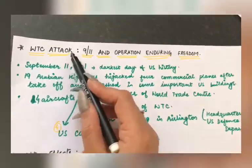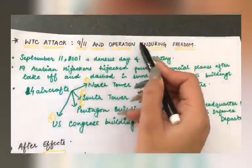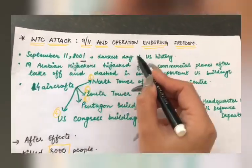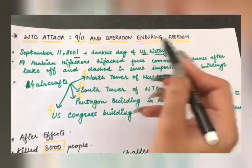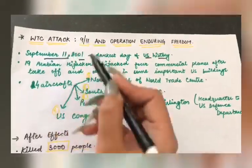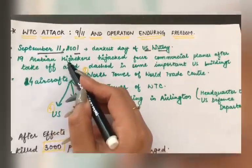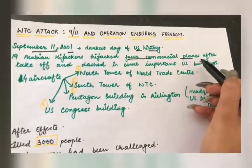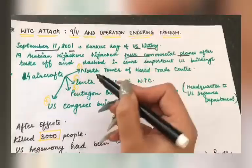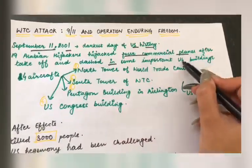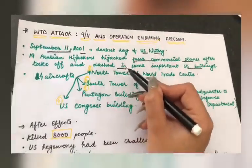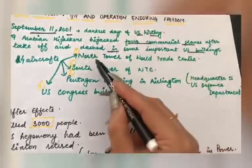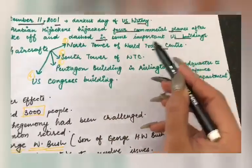Next comes the World Trade Center attack, also known as the 9/11 attack, and Operation Enduring Freedom. September 11, 2001 is considered the darkest day in US history. What happened? Nineteen Arabian hijackers attacked four commercial planes. They crashed those planes into important US buildings: the World Trade Center Twin Towers in New York, the Pentagon building in Arlington — which is the US Defense Department headquarters — and the fourth plane targeted the US Congress building.